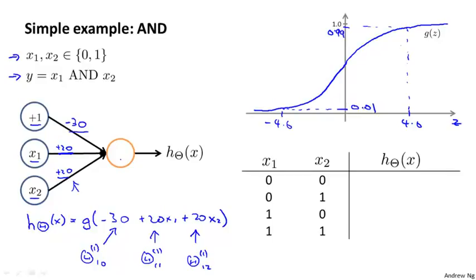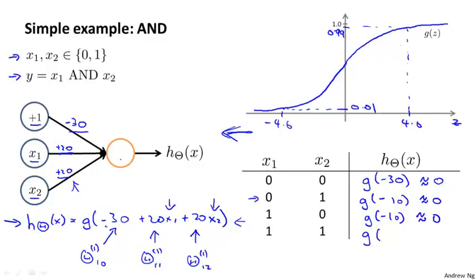Let's look at the four possible input values for x1 and x2 and look at what the hypothesis will output in that case. If x1 and x2 are both equal to 0, then the hypothesis will output g of negative 30, so this will be very far to the left of this diagram, so it will be very close to 0. If x1 equals 0 and x2 equals 1, then this formula evaluates to g, the sigmoid function applied to minus 10. And again, that's to the far left of this plot, so that's again very close to 0. This is also g of minus 10, if x1 is equal to 1 and x2 is 0, this is minus 30 plus 20, which is minus 10. And finally, if x1 equals 1, x2 equals 1, then you have g of minus 30 plus 20 plus 20. So that's g of positive 10, which is therefore very close to 1.